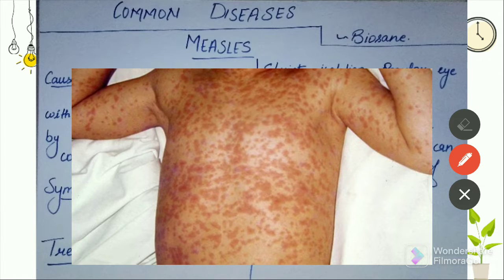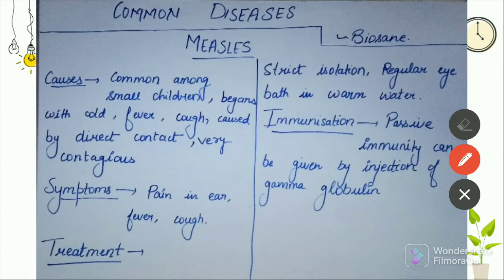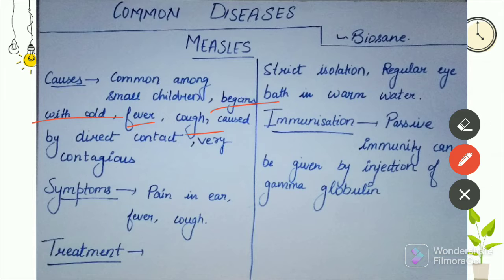Measles causes. This is common among small children — it is very common in small children. It begins with a cold. If you have a child, there are chances that it is measles: fever, cough.